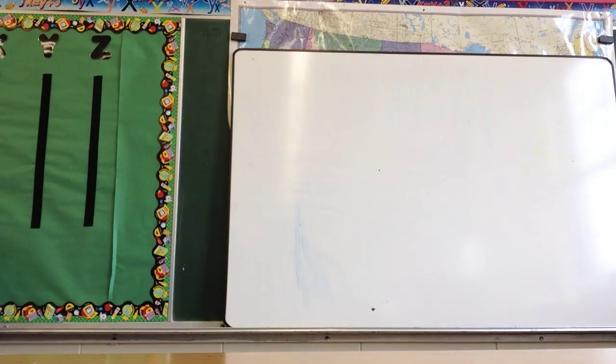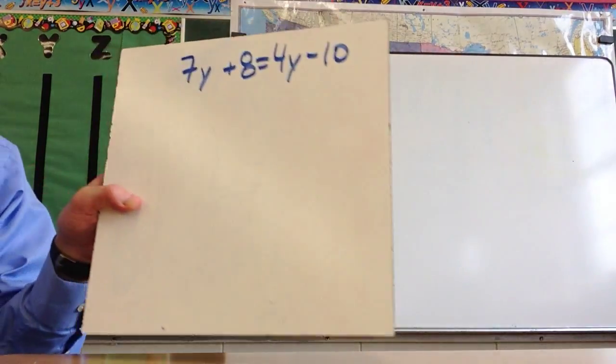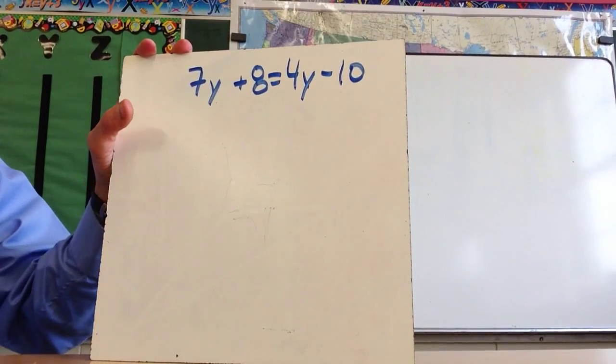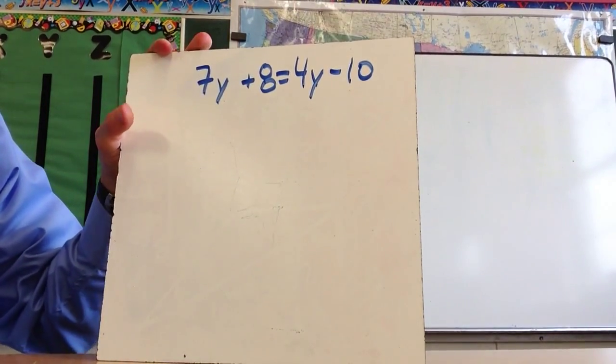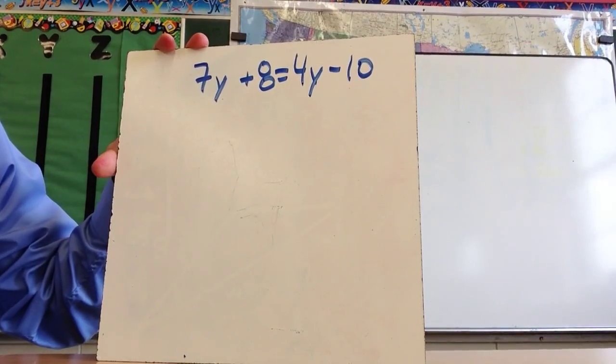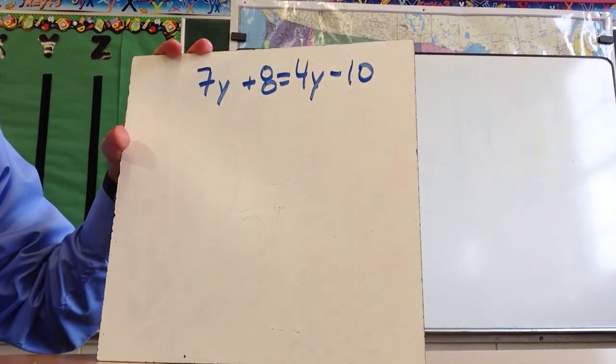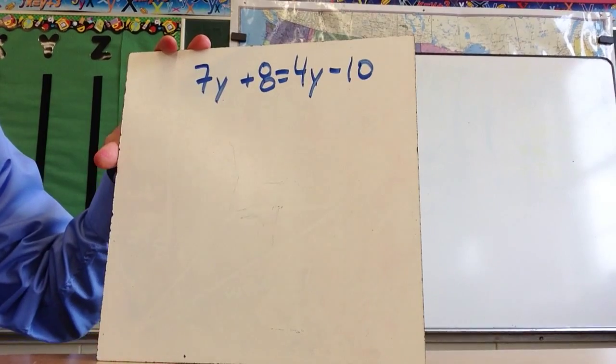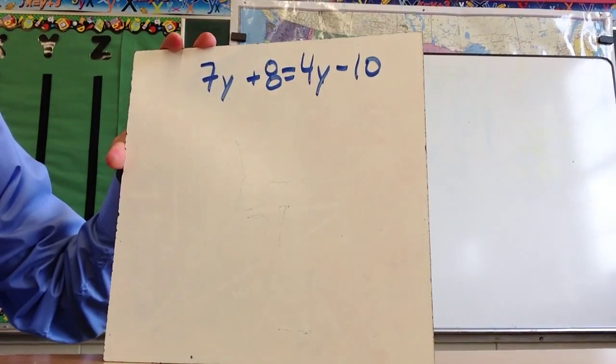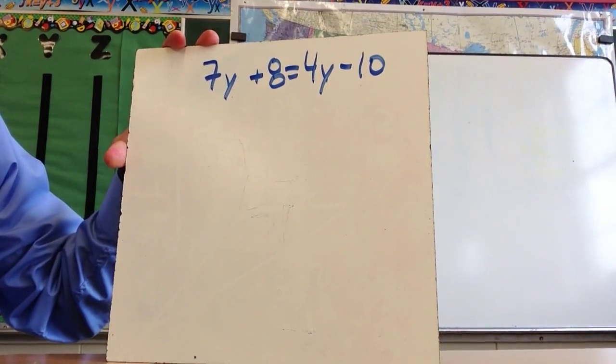Alright, and then there could be a little bit more of a complex problem, but the same idea. And so I need to get the y's on the same side, or the variables on the same side, and the constants on the same side. And so in this particular problem, there are a bunch of ways that you could solve this, take the first step to solve this problem.